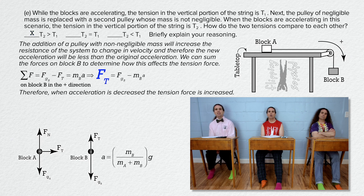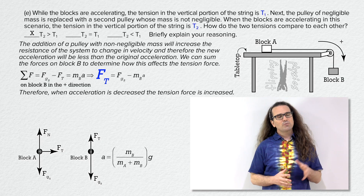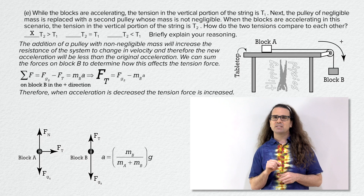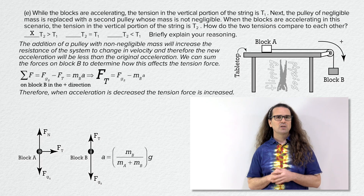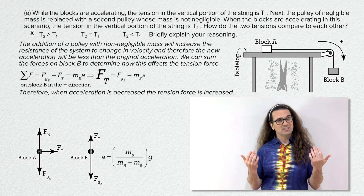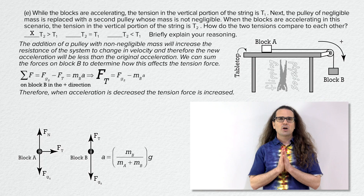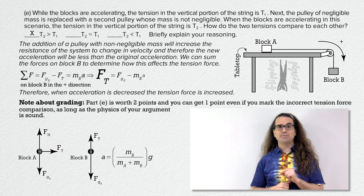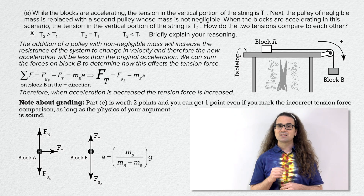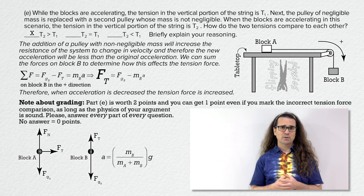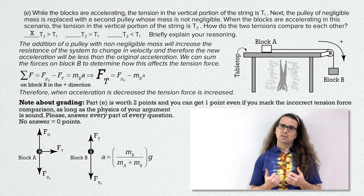Mr. P, why did you write F sub t for tension when in the problem it is just t? The reason I write F sub t is to remind you that it is the force of tension. Each time you read the variable t, you simply said tension — you never called it a tension force. I want you to always remember which variables are forces, so I always write every force with a capital F and a subscript indicating which force it is. That's just me trying to help your brains remember what all these letters mean. Another note about grading: part E is worth 2 points and you can get 1 point even if you mark the incorrect tension comparison, as long as the physics of your argument is sound. Please answer every part of every question — you never know what will get you points. Not answering is certain to get you zero. Thank you very much for learning with me today.